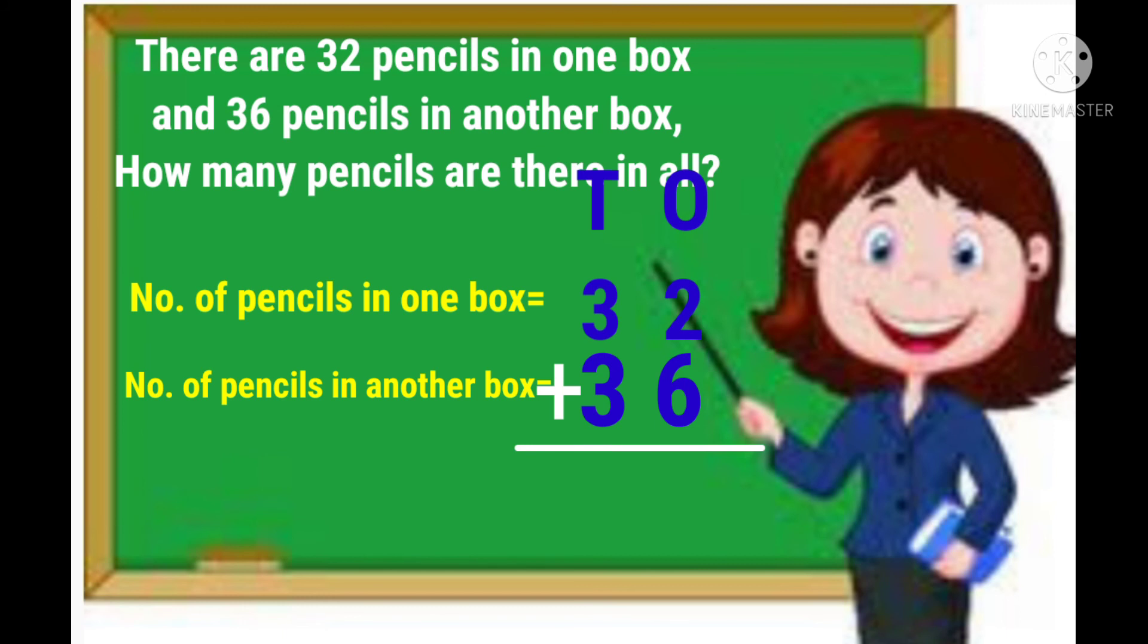Children, first add the ones column. 2 plus 6 is equal to 8. Write 8 in the ones column. Then, add the tens column. 3 plus 3 is equal to 6. Write 6 in the tens column.